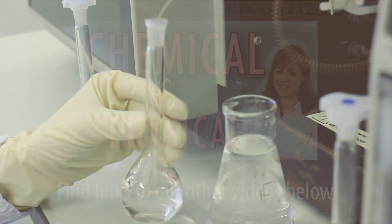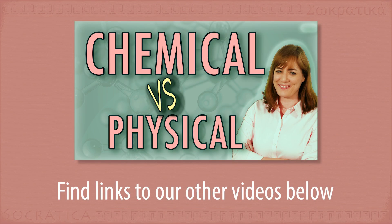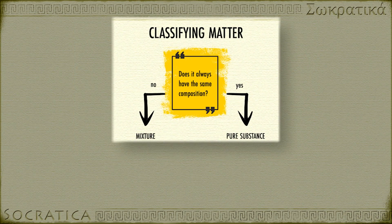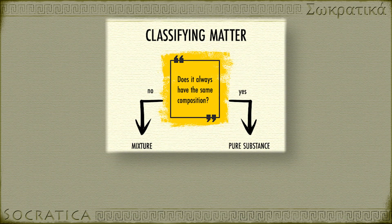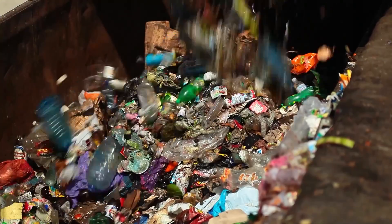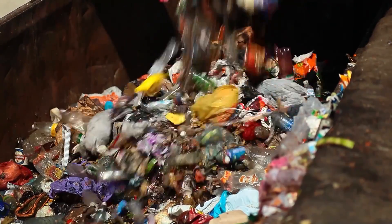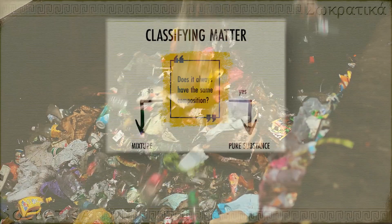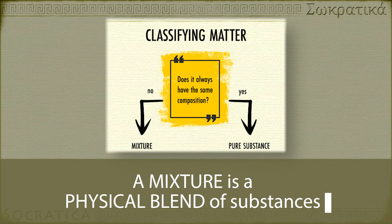We have a video about physical and chemical properties if you want to learn more about this idea. Now let's turn to mixtures, which is more like real life. We run into mixtures in nature all the time. A mixture is a physical blend of two or more substances.